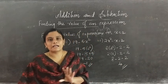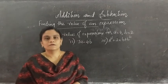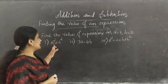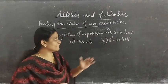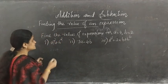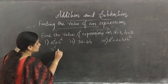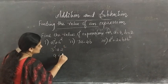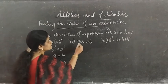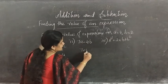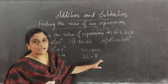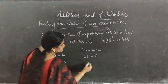This is how you find the value of an expression. Now find the values of expressions for a equal to 3 and b equal to 2. Two variables are used, so two values are given. For a² plus b²: 3² plus 2² is 9 plus 4, which gives 13. For 7a minus 4b: 7 into 3 minus 4 into 2 is 21 minus 8, which gives 13.